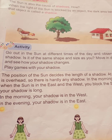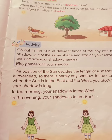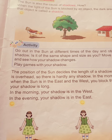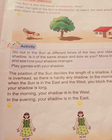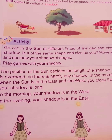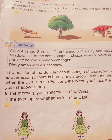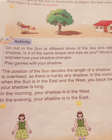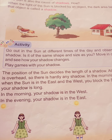Shadow can only be seen in the presence of light. The position of the sun decides the length of a shadow. Go out at different times — the sun will be overhead at noon, around 12 o'clock. The shadow can only be seen in the presence of light.